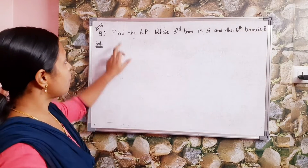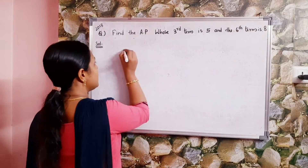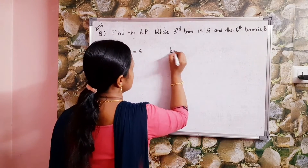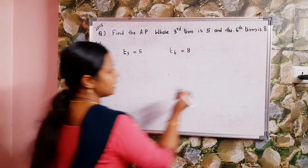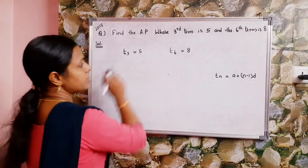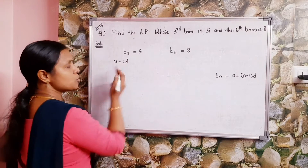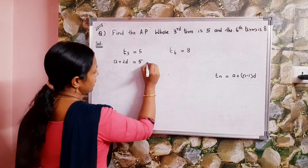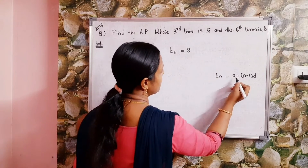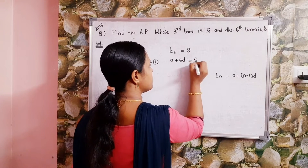Problem 2018: find the AP whose third term is 5 and sixth term is 8. Given: t3 equals 5 and t6 equals 8. Using tn equals a plus n minus 1 into d: t3 gives a plus 2d equals 5 — equation 1. And t6 gives a plus 5d equals 8 — equation 2.